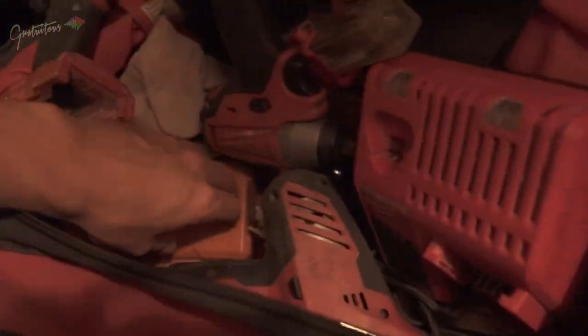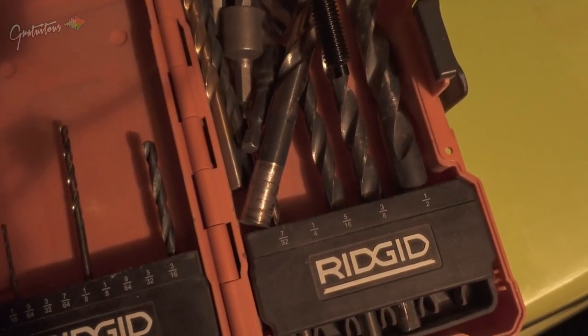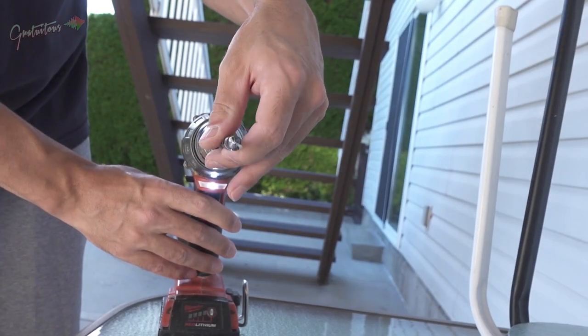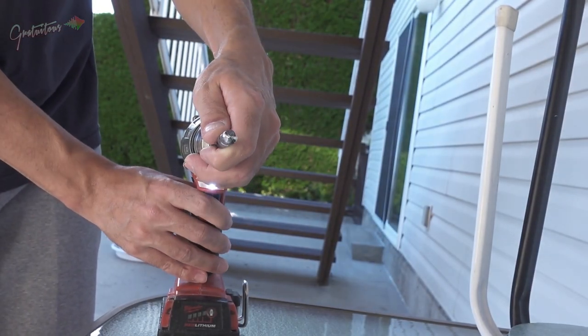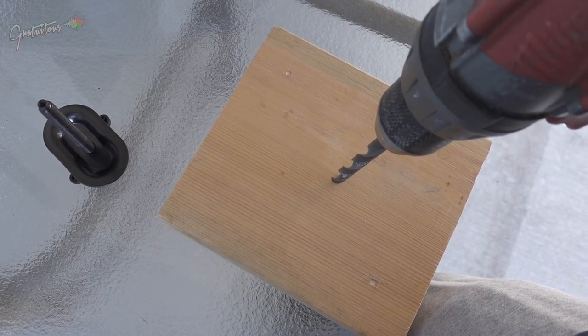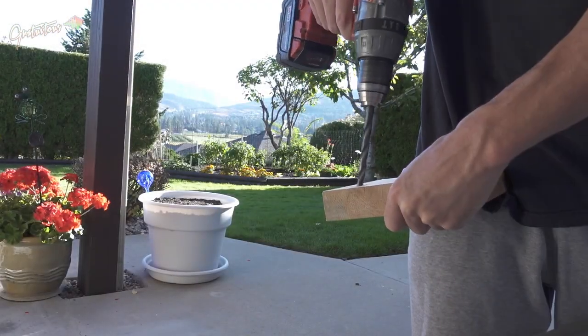For the monitor arms, this is the bolt that goes through the desk to tighten it down. I'm going to drill some holes into that piece of wood. I'm thinking I'm going to need a hole in the middle then two on the sides to bolt it down.